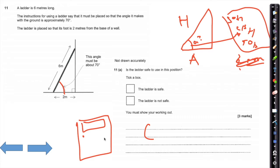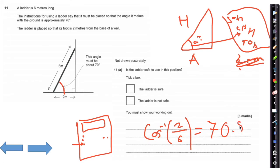Concerned with this angle A, we have the adjacent (2 m) and the hypotenuse (6 m), telling me this angle can be found using cos. As we're looking for an angle, on your calculator it's going to be shift then cos. Using the fraction button, type adjacent over hypotenuse: 2 over 6. Shift cos of 2/6 gives 70.528 degrees — roughly 70.5 degrees.